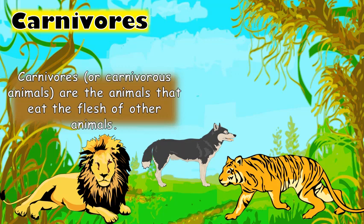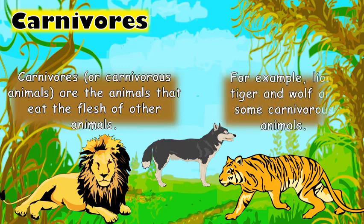Carnivores are also known as carnivorous animals. These are the animals that eat the flesh of other animals. For example, lion, tiger, and wolf are some carnivorous animals.